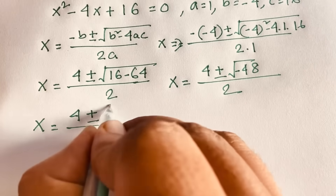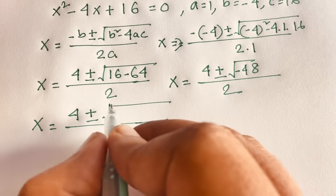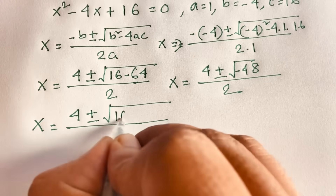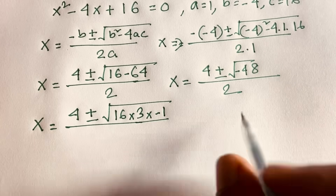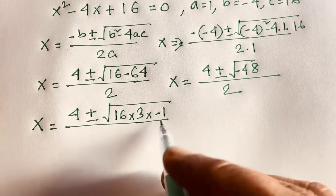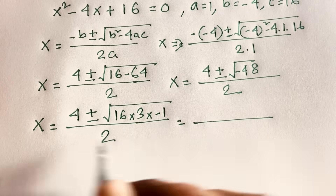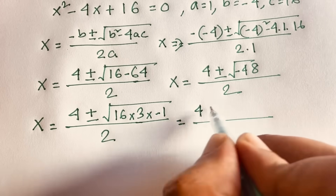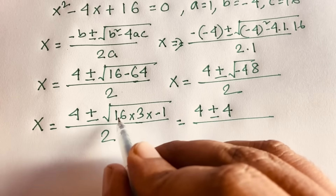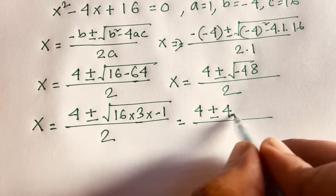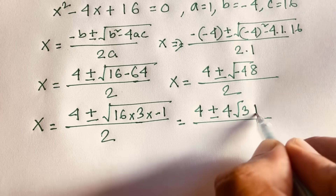Breaking down negative 48: the square root of negative 48 equals 4 times the square root of 3 times the square root of negative 1. We know the square root of negative 1 is the imaginary unit i. So we have x equals 4 plus or minus 4 root 3 i, over 2.